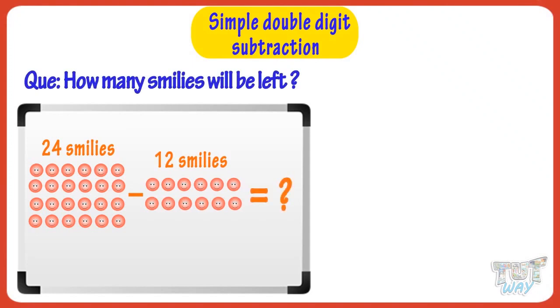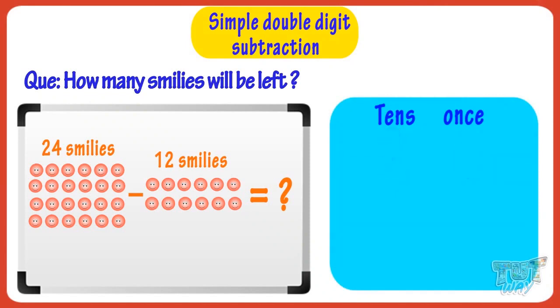Let me help you calculate. Write the bigger number first, that is 24. 2 is in the tens place. 4 is in the units place or ones place.